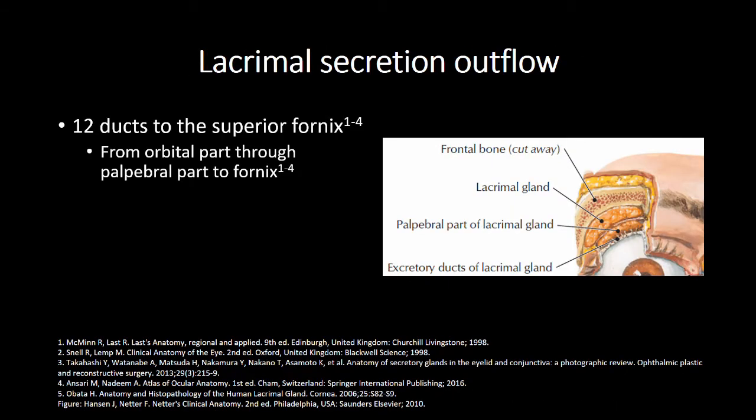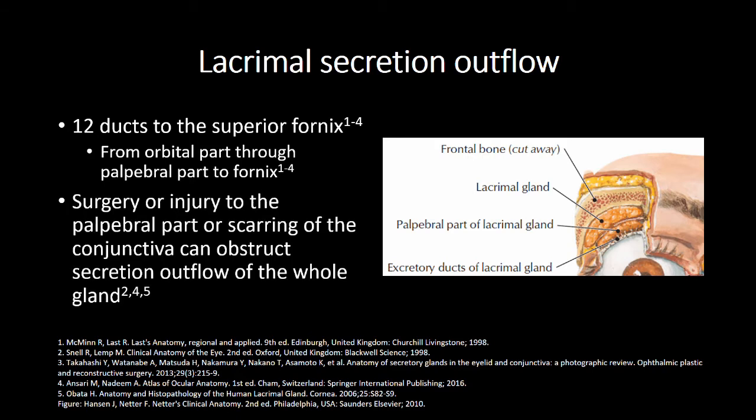Approximately 12 ducts from the lacrimal gland drain into the superior conjunctival fornix. They start in the orbital part and course through the palpable part before opening into the fornix. As all the ducts ultimately pass through the palpable part, surgery or injury to it may impair or destroy drainage of the whole gland. Scarring of the conjunctiva, such as by chemical burns, iatrogenic injury or diseases affecting the ocular surface, may also obstruct secretion outflow.